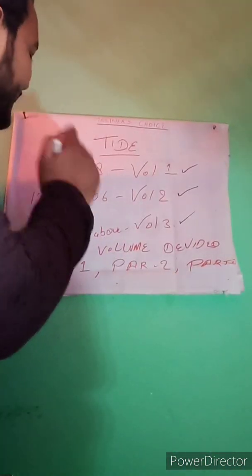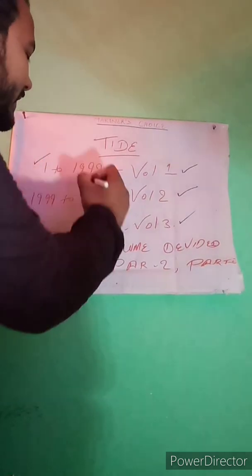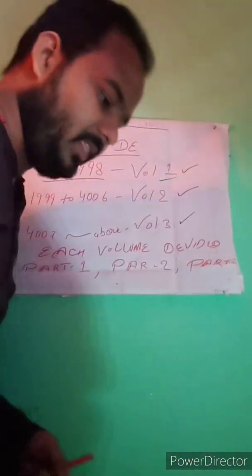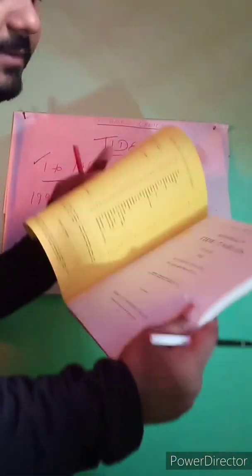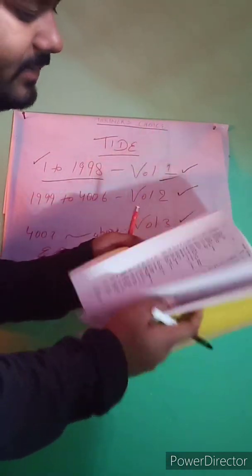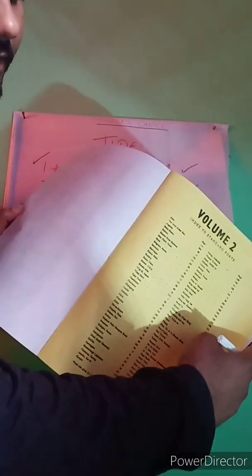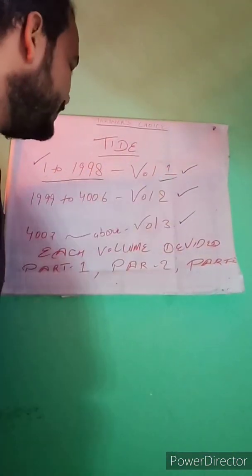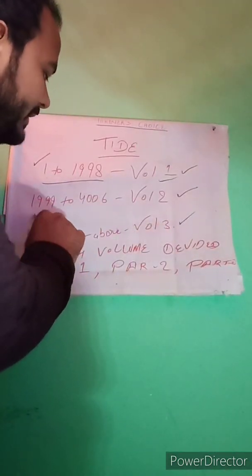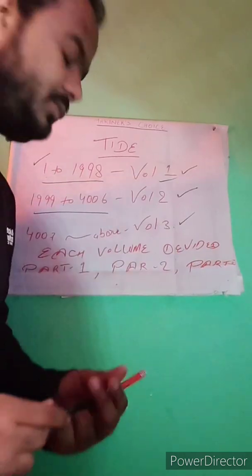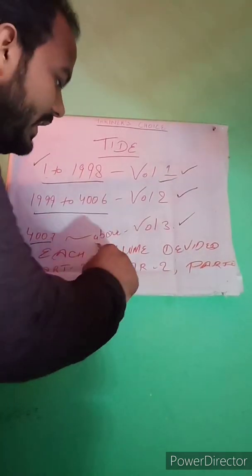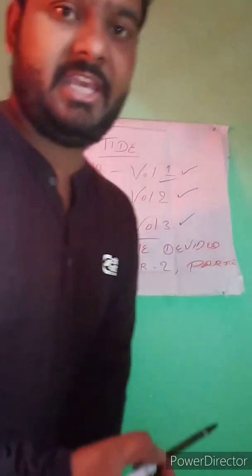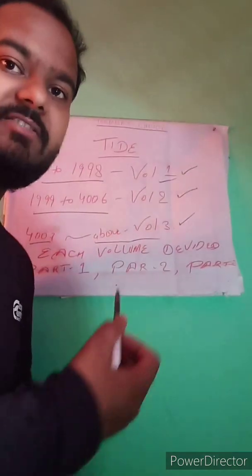It is very simple — when the number is given, you will know which volume to refer to. If the number is between 1 and 1998, you refer to Volume 1. Volume 1 starts from the beginning of the book. Volume 2 covers numbers 1999 to 4006, and Volume 3 covers number 4007 and above.